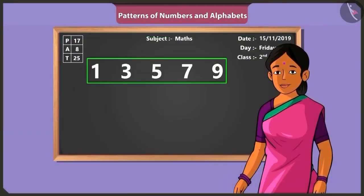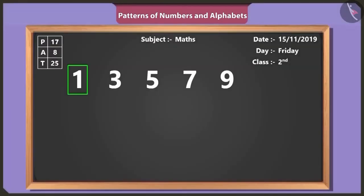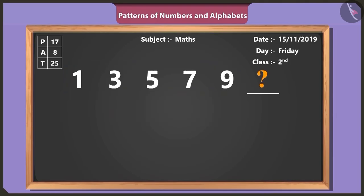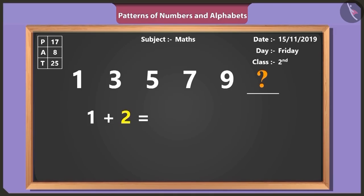Binny, can you see a pattern in these numbers? One, three, five, seven, nine. These numbers are written in ascending order. So tell me, which number comes after nine? Ten comes after nine. No, Binny. Look carefully. These numbers are written in a pattern. By adding one and two, you get three. And this is how the pattern builds up.